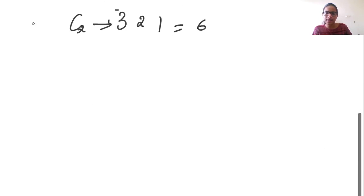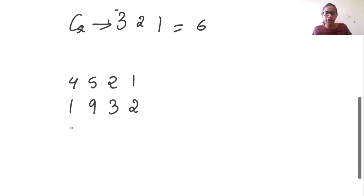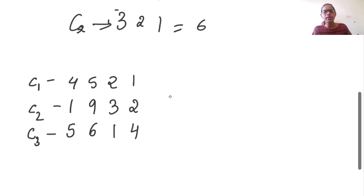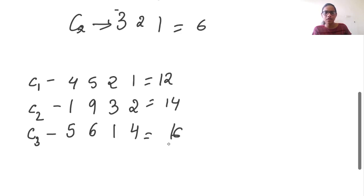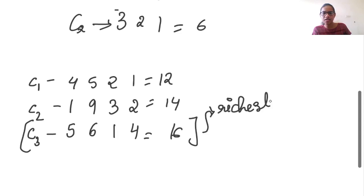Let us look at one more example. We write: [4, 5, 2], [1, 9, 3, 2], and [5, 6, 1, 4]. Row C1 totals 12 units, C2 totals 14 units, and C3 totals 6+4=10 plus 6 equals 16. Customer 3 is the richest customer of all three, and thus we need to return 16. It's very simple.